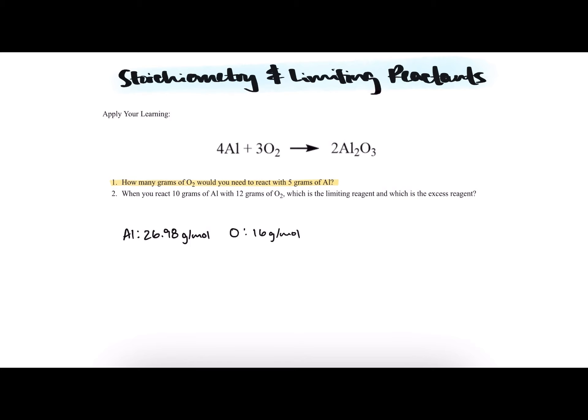Question Number 1 asks: how many grams of O2 would you need to react with 5 grams of Al or aluminum? So this question is referring to the chemical equation listed here.